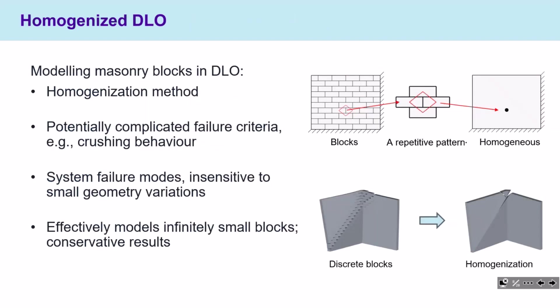Our solution is to use a homogenized DLO. The concept of homogenization has been mentioned multiple times in this workshop. Basically, you find a repetitive pattern in your block, work out the equivalent material, and make it a homogenized material. Then you can solve the problem as a continuum problem using well-established numerical methods. This allows modeling of potentially complicated failure criteria and avoids local failure modes, so we are looking at system failure modes.